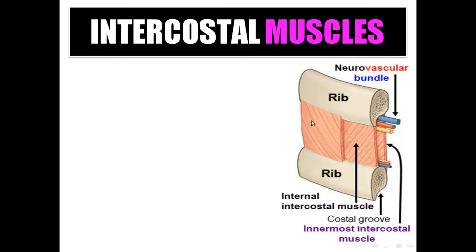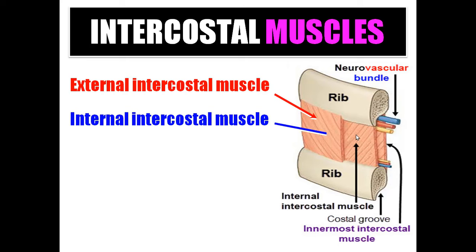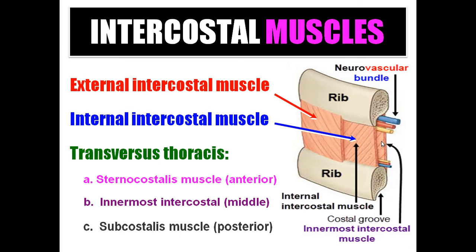Intercostal muscles are arranged in three layers. The outer layer is the external intercostal muscle, the middle layer is the internal intercostal muscle, and the inner layer is the transversus thoracis. The transversus thoracis is arranged into three parts: the anterior part behind the sternum is the sternocostalis, the middle part is the innermost intercostal muscle, and the posterior part is the subcostal muscle.